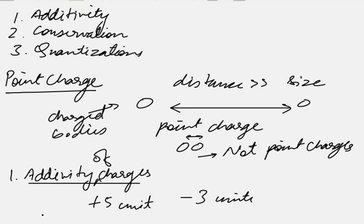If we have a charge of plus 5 units and a charge of minus 3 units, what will be the net charge of the system? We will find the net charge by simply adding them algebraically. 5 minus 3 gives us 2 units. So the net charge of the system will be 2 units.